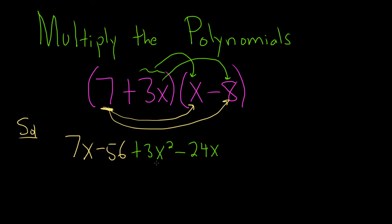OK, now we can just clean stuff up. So this is 7x. Oh, we can combine the x's here. Look at this. 7x minus 24x is going to give us a minus 17x. And then we have minus 56 plus 3x squared.